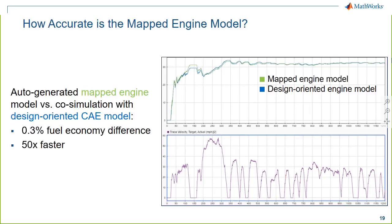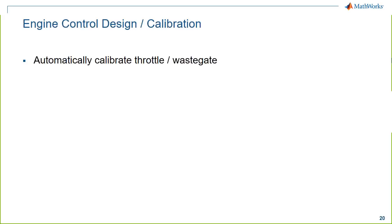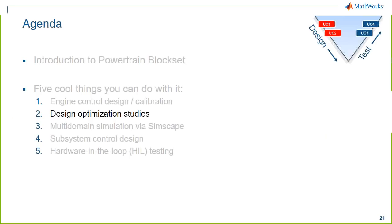In this section we covered ways to automatically calibrate things like throttle and wastegate, defining and simulating custom calibration procedures in Stateflow with whatever control inputs and logic you choose. You can also generate engine maps from your CAE models using these calibration activities.